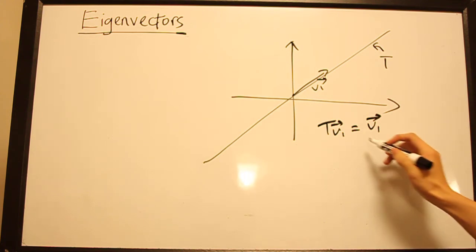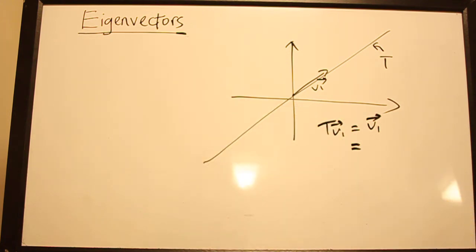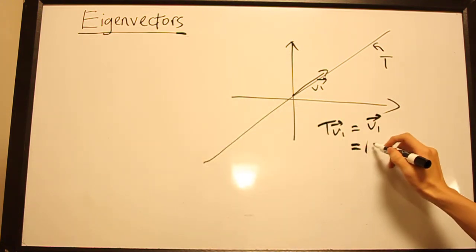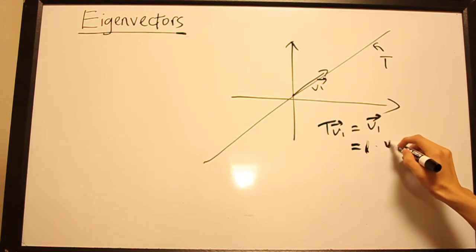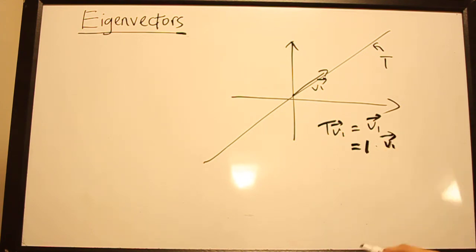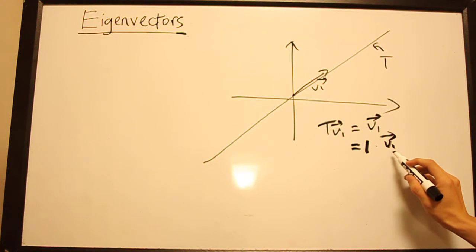And if we wanted to be explicit about the form, putting it in the form that we had just now, this could be written as 1 times V₁. So we say that V₁ is an eigenvector of T with eigenvalue 1.